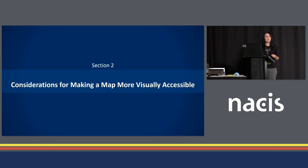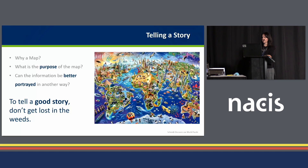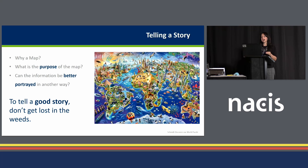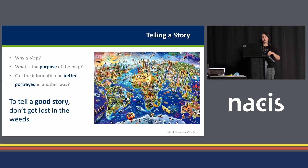Some considerations for making a map more visually accessible: you're telling a story with your map, so the first thing to ask yourself is, why a map? Should it even be a map? What is the purpose? Your map should tell a story, and to tell a good story, don't get lost in the weeds. Too much information can confuse your reader, especially those with cognitive disabilities. Too many unnecessary elements can be difficult for some people to understand — if it doesn't add value, just get rid of it.